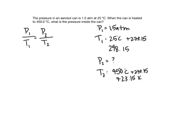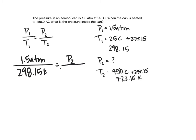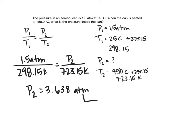Plugging in: 1.5 atmospheres divided by 298.15 Kelvin equals P2 divided by 723.15 Kelvin. P2 gives us 3.638 atmospheres. With two significant figures, that rounds to 3.6 atmospheres.